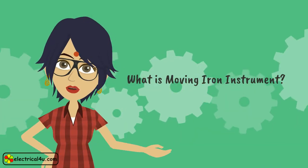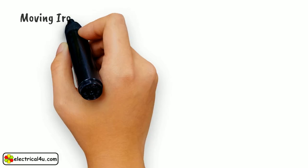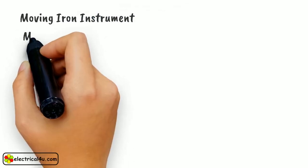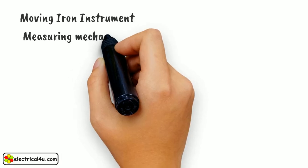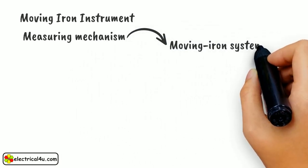What is a moving iron instrument? This instrument is one of the most primitive forms of measuring and relay instrument. Moving iron instruments consist of a measuring mechanism consisting of a moving iron system.